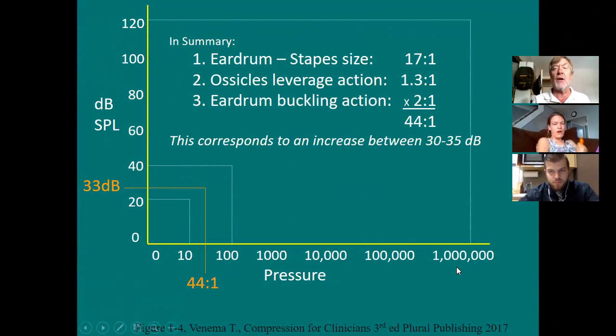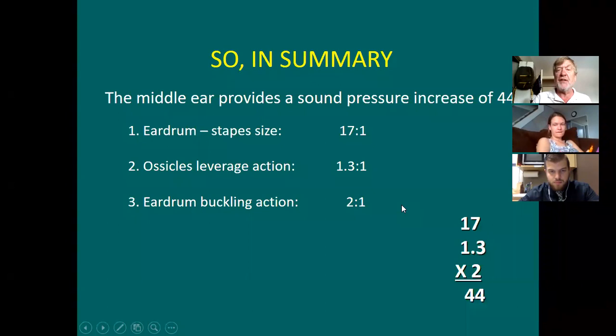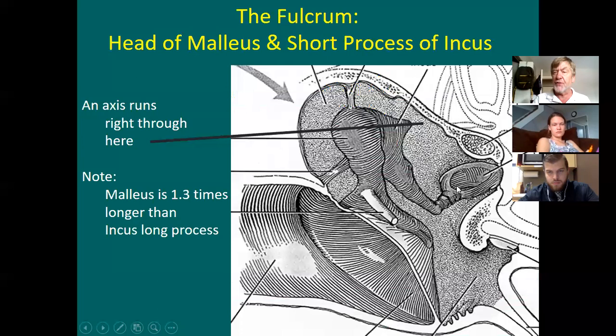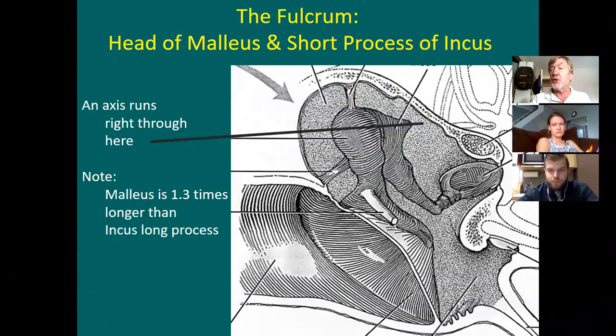We were talking about what the middle ear does — what's its purpose? When looking at this slide, the eardrum is way bigger than the size of the footplate of the stapes fitting into the oval window. The large size of the drum compared to the small size of the footplate of the stapes is largely the first way the middle ear increases sound pressure going into the cochlea, because the cochlea is filled with fluid.